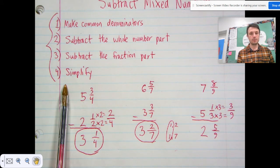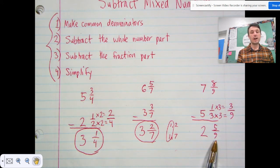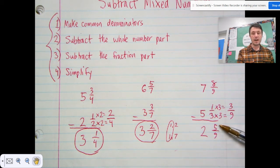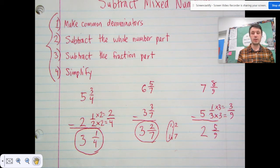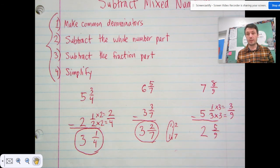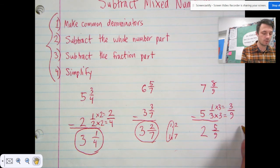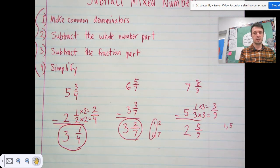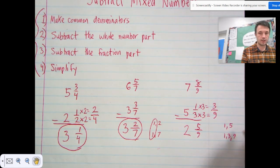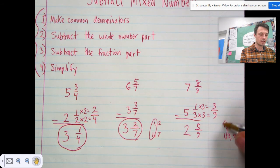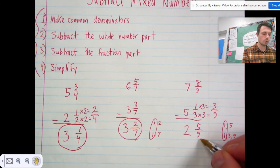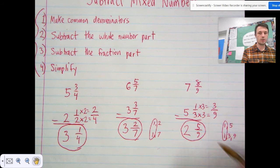Step four: simplify. Five-ninths is already in simplest form because five is a prime number and it can't fit into nine. If you weren't sure, you can verify by listing factors: factors of five are one and five; factors of nine are one, three, and nine. The GCF is one, so five-ninths is already in simplest form. Two and five-ninths is our final answer.